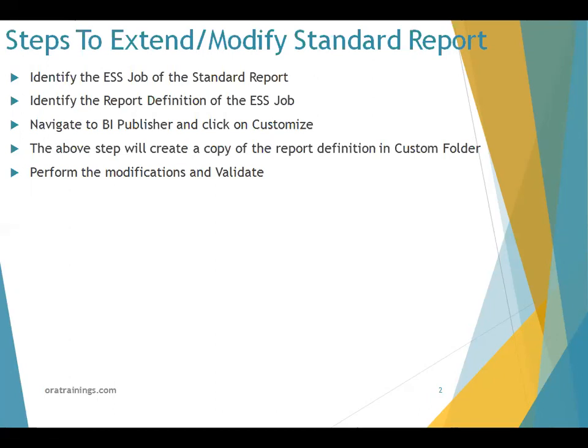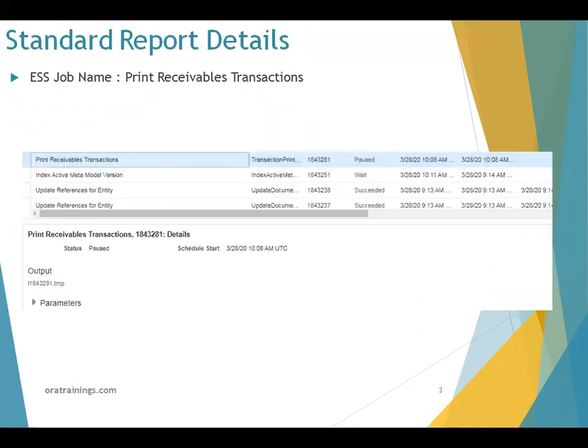Let's understand the high-level steps of modifying a standard report. As I said, the first step is identifying the standard ESS job name. In this example I'm considering 'Print Receivable Transactions' as the standard ESS job name, where we can see the invoice details. It's a billing invoice — once you click on it, it will create a set of child jobs for invoices, credit memos, and so forth. This is a parent ESS job on which other things are dependent. Let's see the definition of this particular Print Receivable Transactions job.